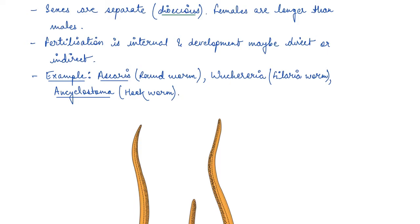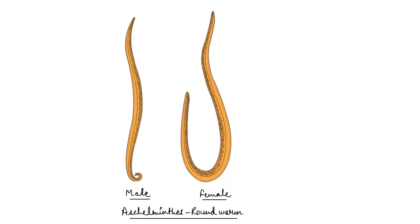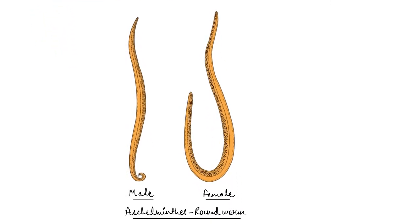Some examples of the phylum Aschelminthes are Ascaris which is a roundworm, Wuchereria which is filaria, which is a disease in humans, and hookworm which is Ancylostoma. These are known as Ancylostoma, that is hookworm. Here you can see the body type in the case of Aschelminthes roundworm. Since they have a rounded body, if we cut a section, that is why they are named as roundworms.